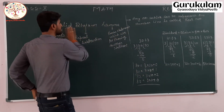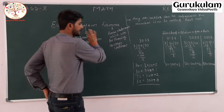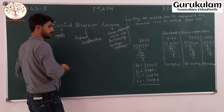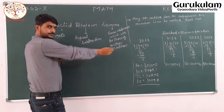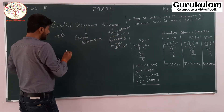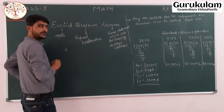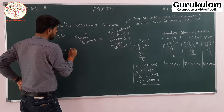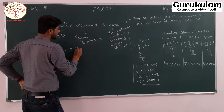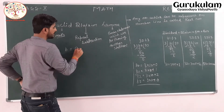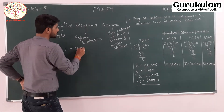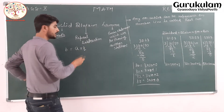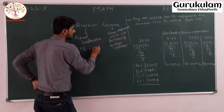Now, what does Euclid's Division Lemma state? Any real number b, when divided by a, gives the quotient q and the remainder r.